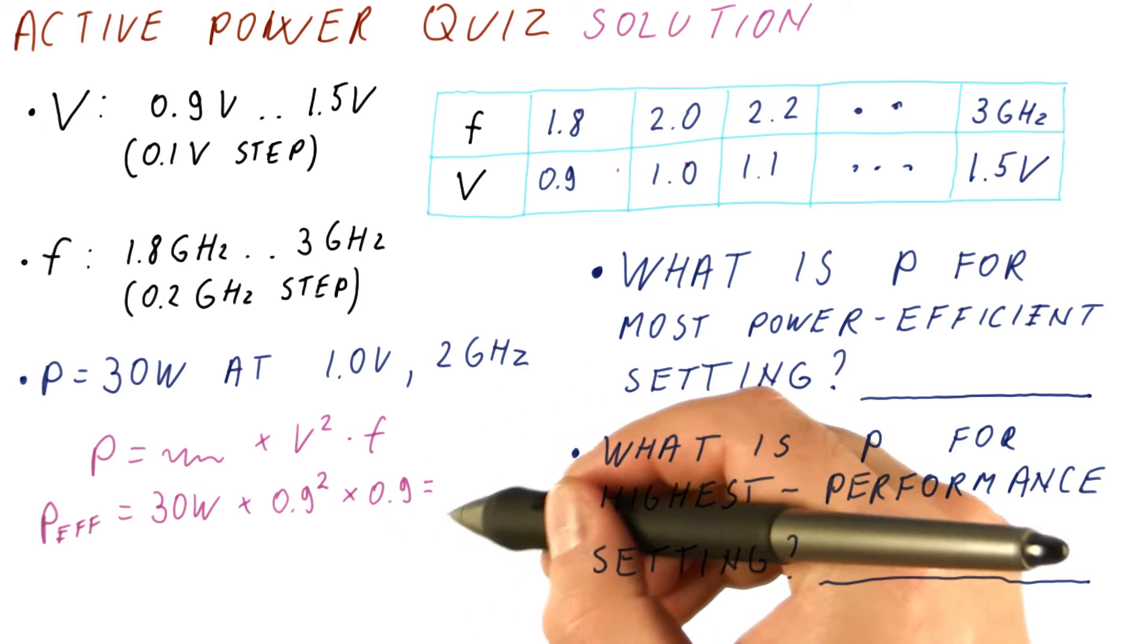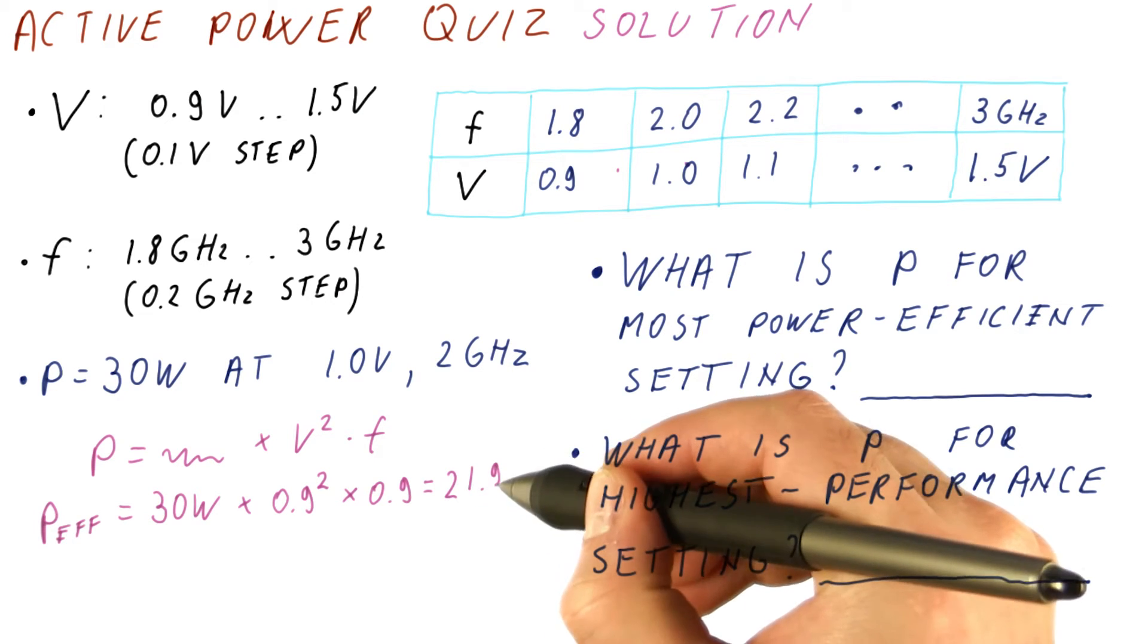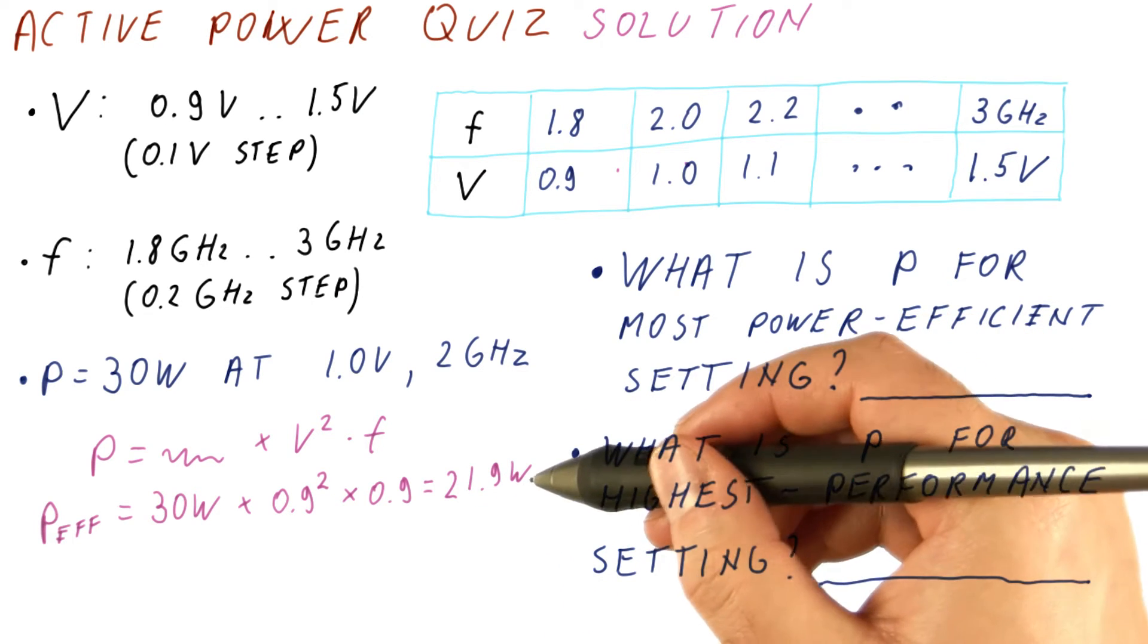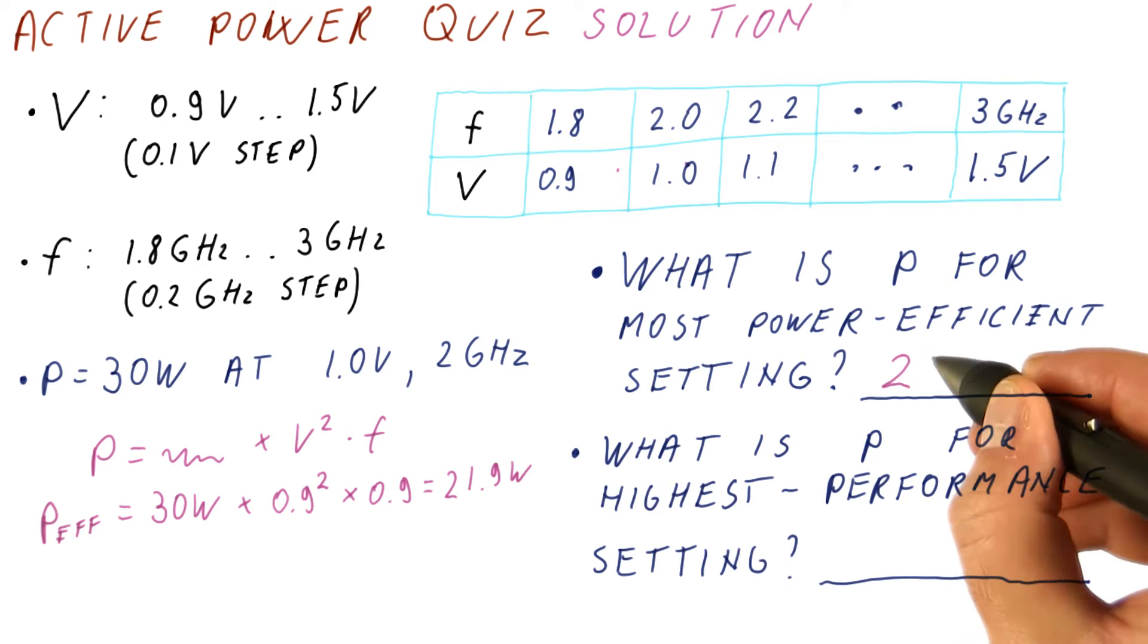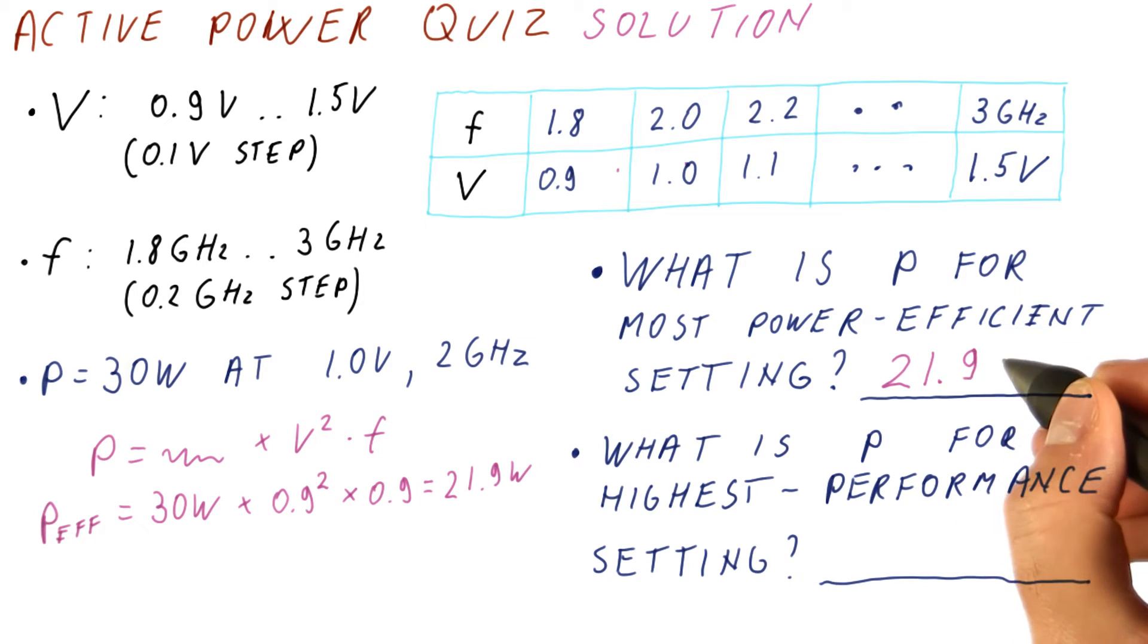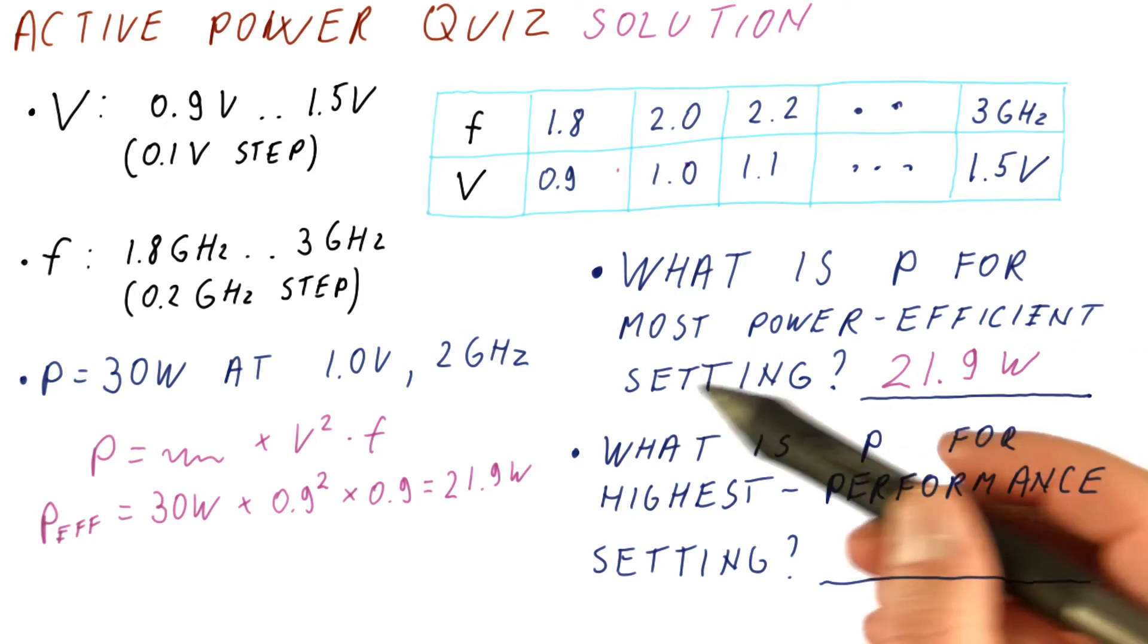So this is again 0.9 of what it was. And when we multiply this out, we get 21.9 watts, or 22 watts. So the answer here is that the power is 21.9 watts.